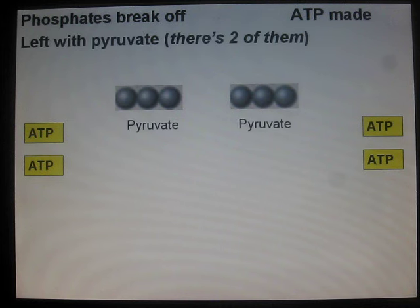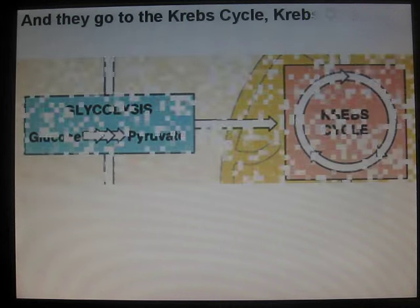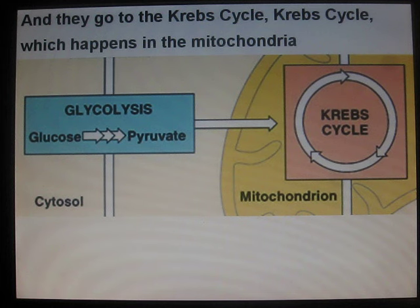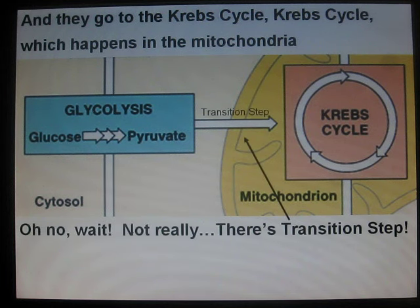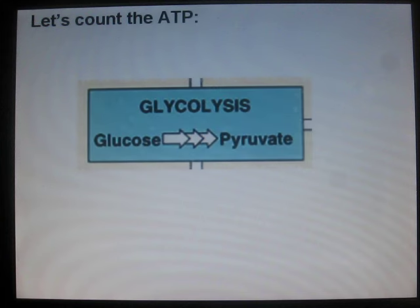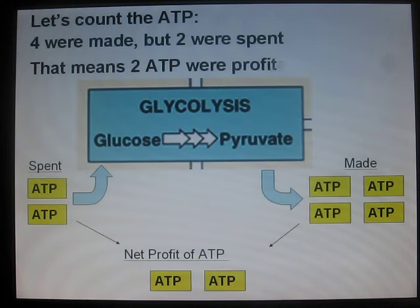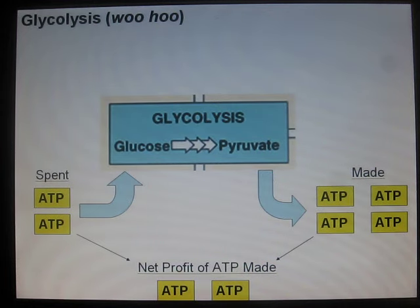Left with pyruvate — there's two of them — and they go to the Krebs cycle, which happens in the mitochondria. Oh wait, not really — there's a transition step first. Let's count the ATP: four were made but two were spent, so two ATP were profited. That's glycolysis!